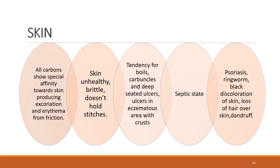The skin is unhealthy, brittle, and doesn't hold stitches. There is a tendency for boils, carbuncles, and deep-seated ulcers with eczematous areas and crusts — carboanimalis is one of the main remedies for this. They easily go into a septic state because of poor circulation, making them more related to remedies like pyrogenum and muriatic acid.